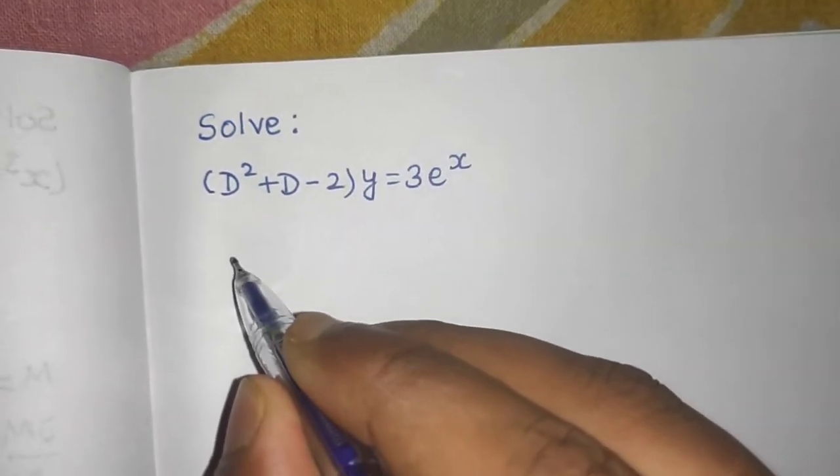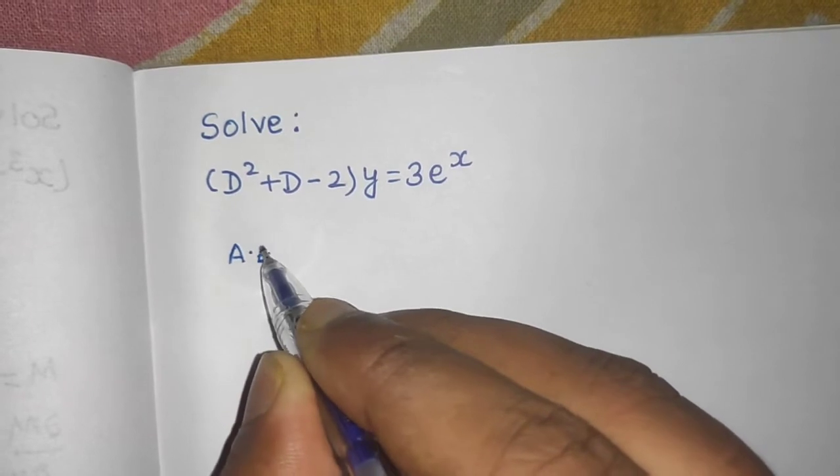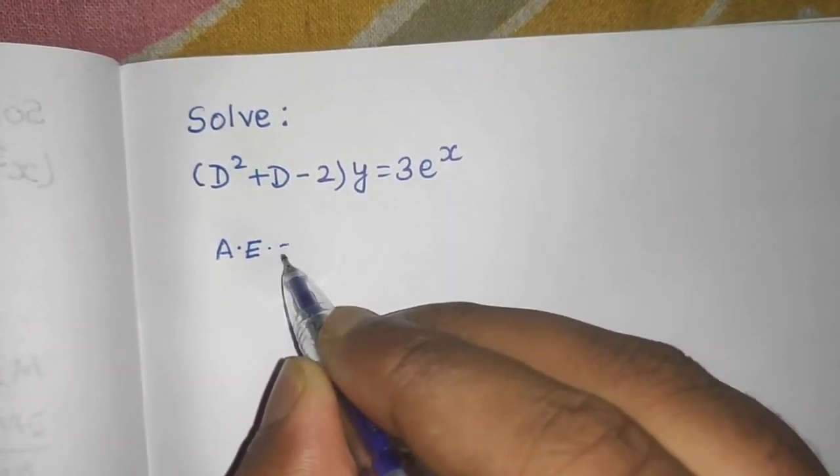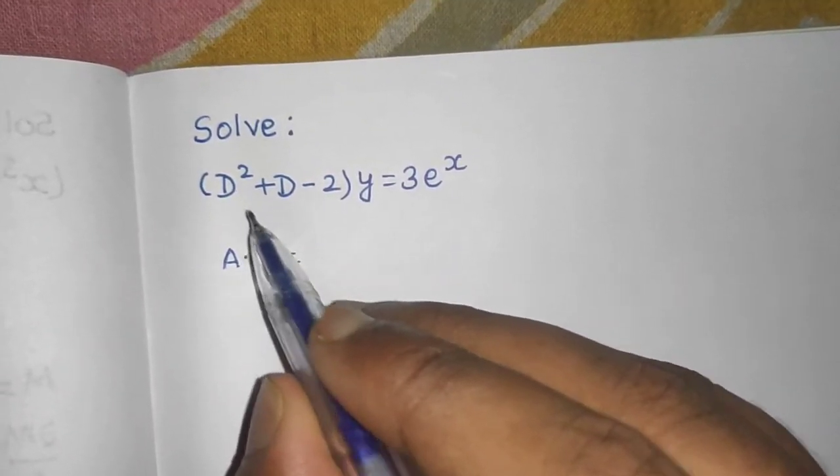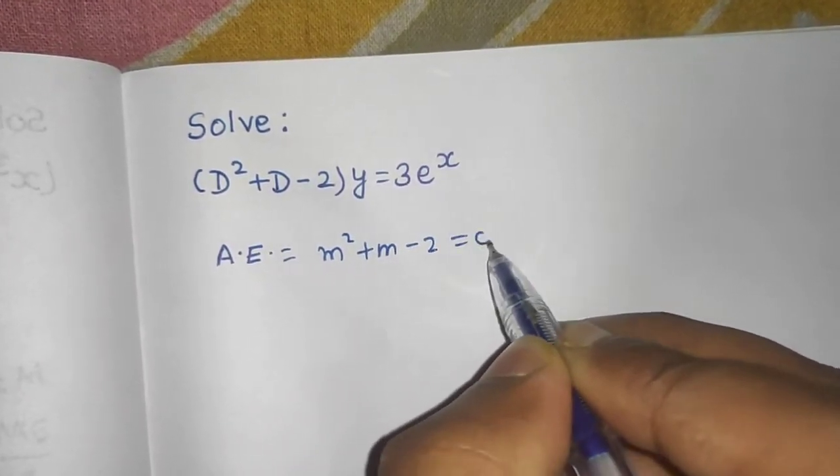Replace this d by m. First we will find the auxiliary equation in order to find the complementary function. The auxiliary equation is replace this d by m, so m square plus m minus 2 and equate it to 0.